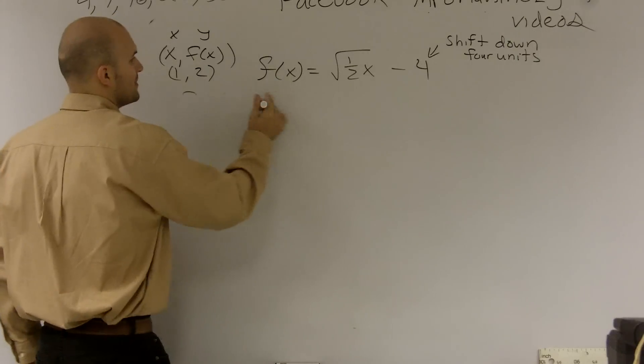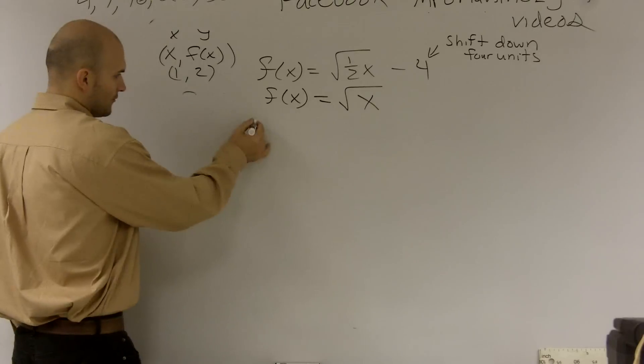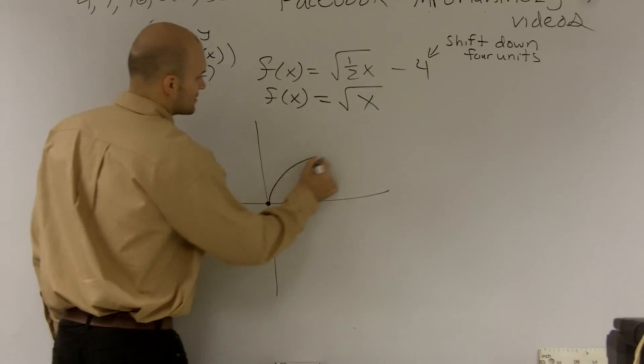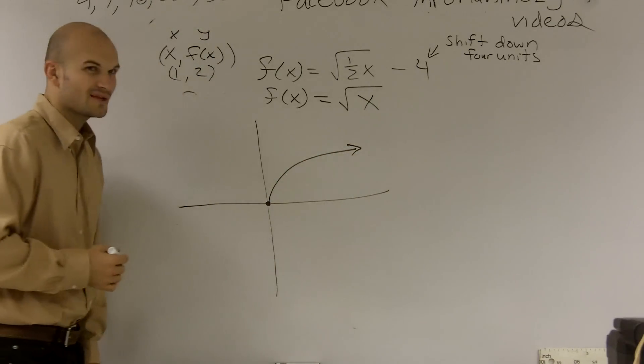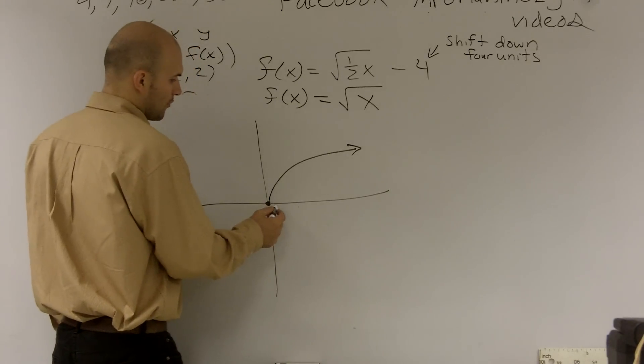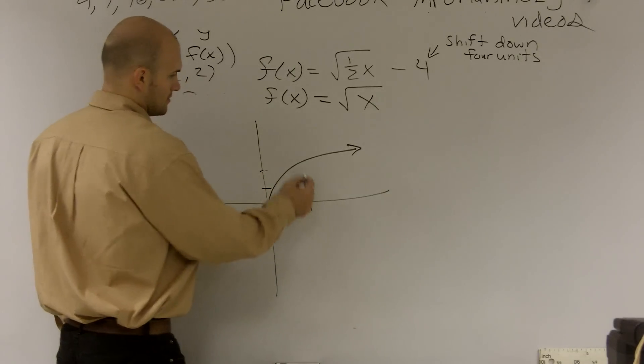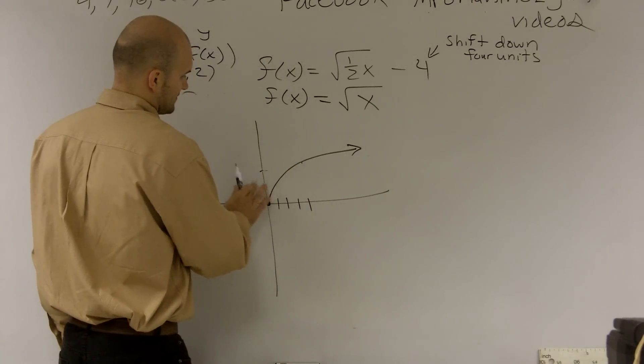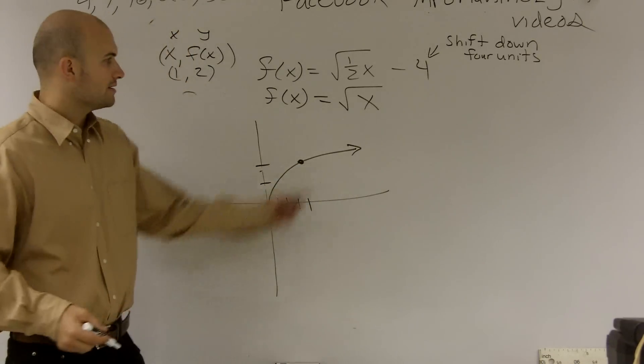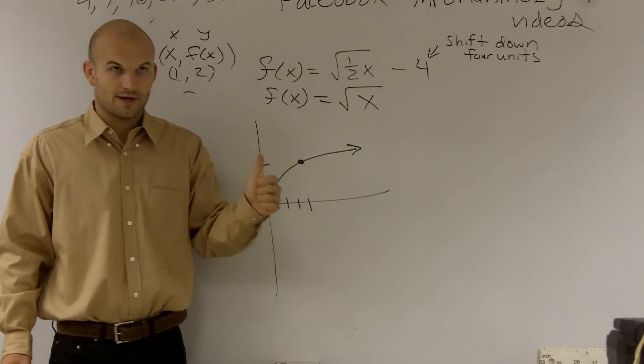Now let's look at the parent. The parent is your root function, square root of x. So hopefully at this time we should have a rough sketch of what this looks like. And let's just pick a point that we want to use. Let's pick the point 4, 1, 2, 3, 4. And we know that 4 comma 2. Right? Because the square root of 4 gives you 2.